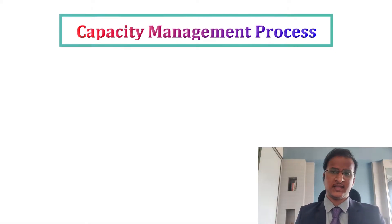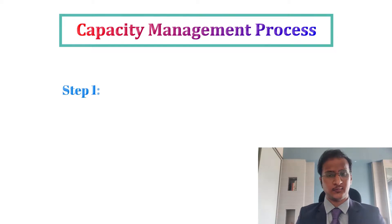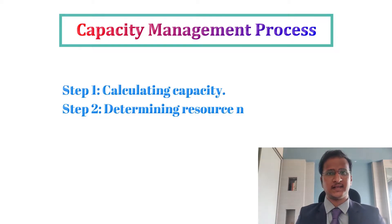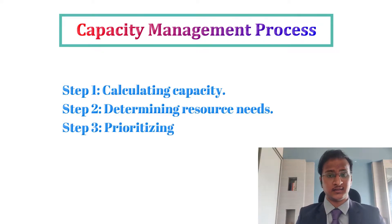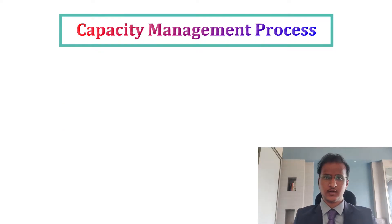Under the Capacity Management process, there are three steps. The first one is calculating the capacity, the second one is determining the resource needs, and the third step is prioritizing what to work on.